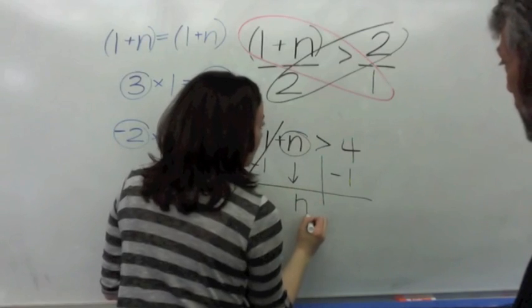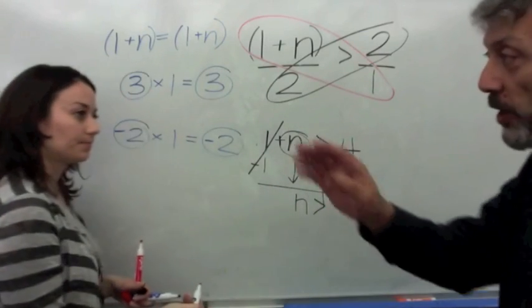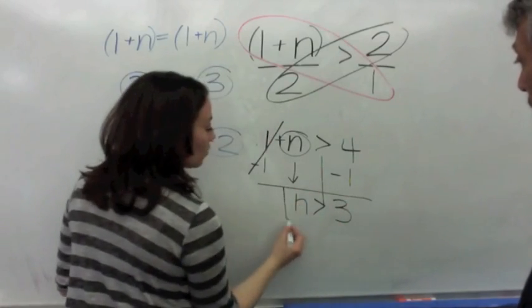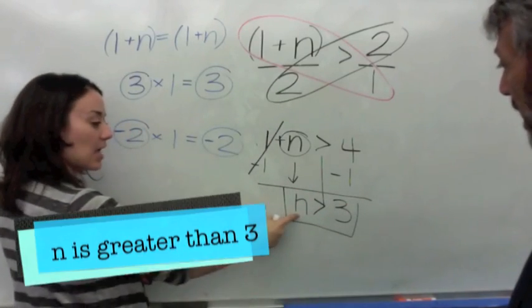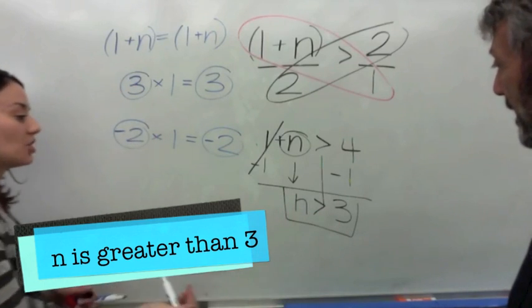Cross it out. Bring down the n. The sign is greater than... And 4. Take away 1. I know. I know. 3. Good job. So, let's all read this inequality together. Say, n is greater than 3.